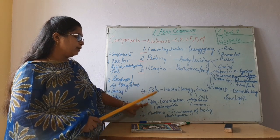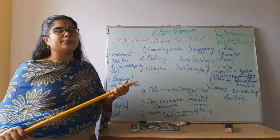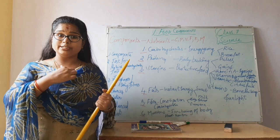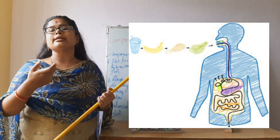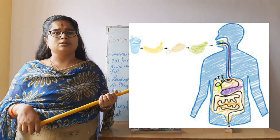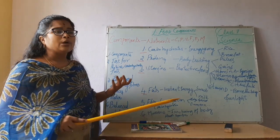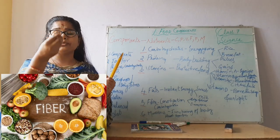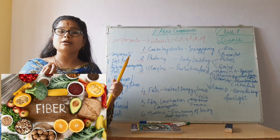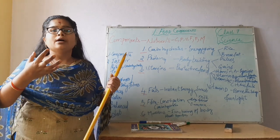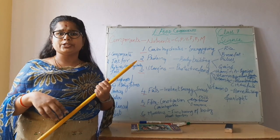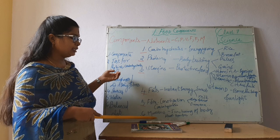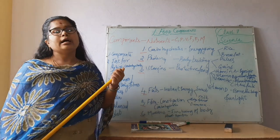Next is fiber. Fiber helps in digestion and prevents constipation. All the food we eat must get digested in our body. You will get fiber from vegetables like ridge gourd, drumsticks, lady's finger, and similar vegetables. Fiber helps with bowel movement. Constipation means not getting digested properly and not having proper bowel movement.